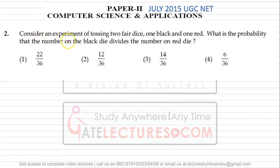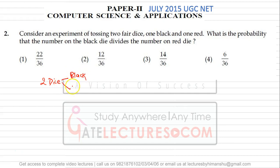Question number 2: Consider an experiment of tossing two fair dice, one black and one red. What is the probability that the number on the black die divides the number on the red die? So we have two dice, one black and one red. The dice are distinguishable by color, and both have numbers from one to six.